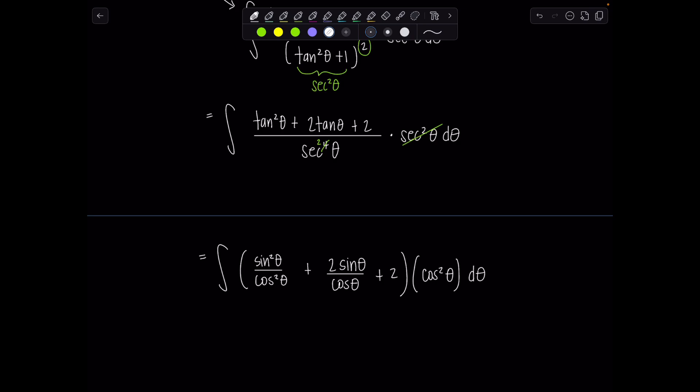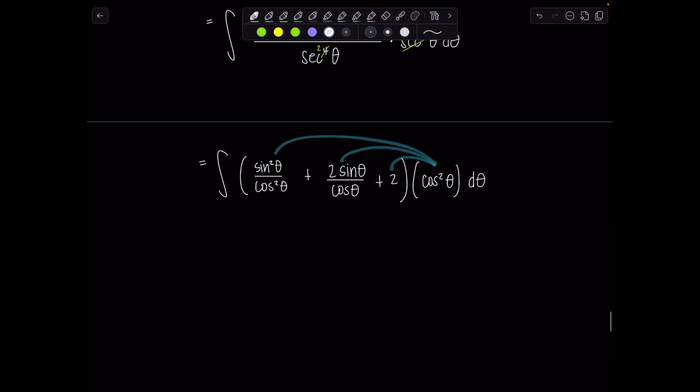Then this will distribute. And we have some lovely cancellation that occurs. So this is going to be sine squared theta plus, only one cosine cancels, so 2 sine theta cosine theta plus 2 cosine squared theta, d theta.